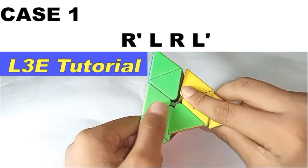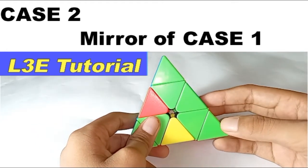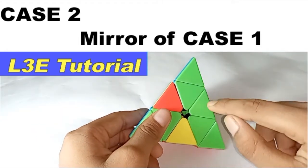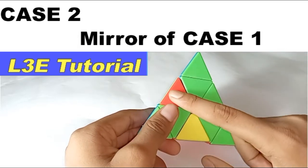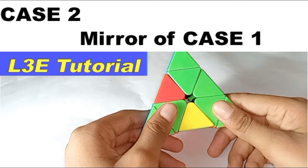Case number two is just a mirror. See, this color is the same, but this red is on the left side. What you do in this case is just do a lefty sledge like this.